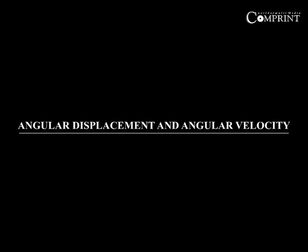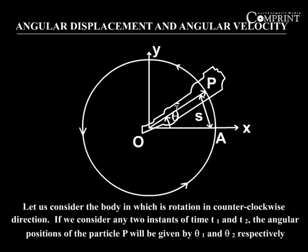Angular displacement and angular velocity. Let us consider the body in the figure which is rotating in counterclockwise direction. If we consider any two instants of time, t1 and t2, the angular positions of the particle P will be given by theta1 and theta2 respectively as shown in the figure.